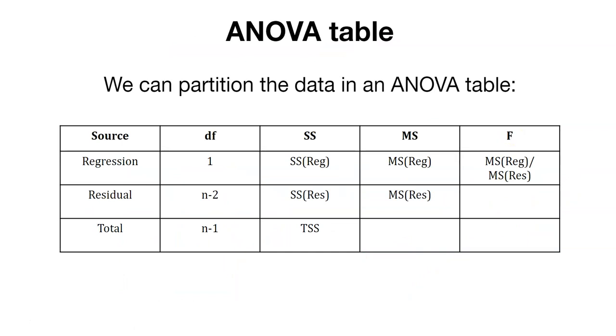Now we can partition that data using this ANOVA table. Here we have a certain number of degrees of freedom for the regression, for the residual, and for the total. We represent each row in the ANOVA table with the sums of squares. Remember we have the sums of squares for the regression, the sums of squares for the residual, and then the total sums of squares.